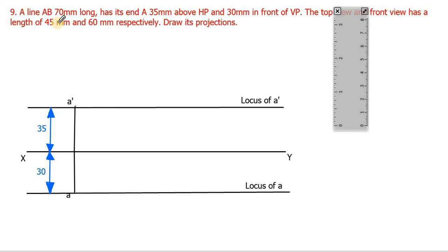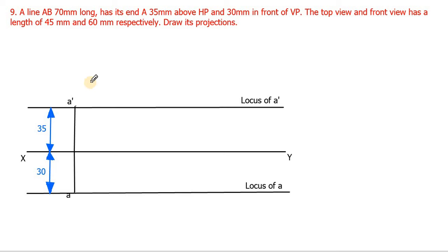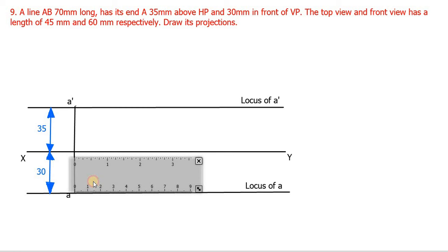The true length of the line is given as 70 mm, but the HP inclination (theta value) is not given, so we can't draw the true length line directly. Instead, the top view length is 45 mm and the front view length is 60 mm. The top view will cut at the locus of A, so take the scale, keep it on the locus of A, and mark 45 mm — mark that point.